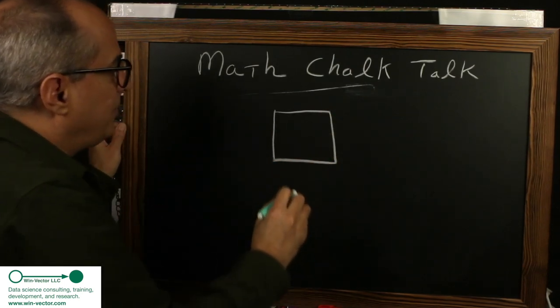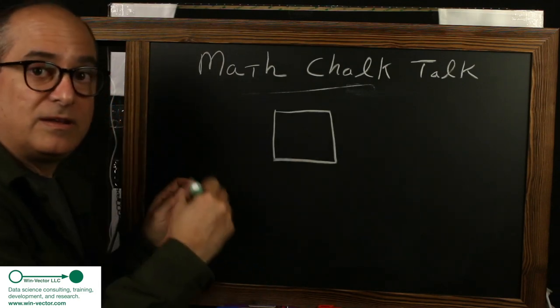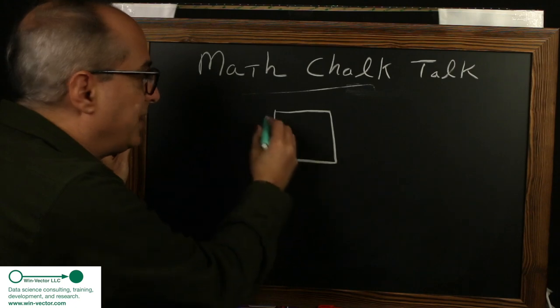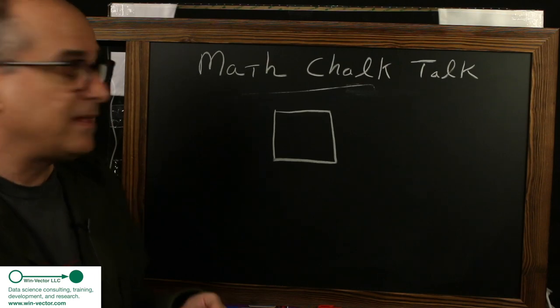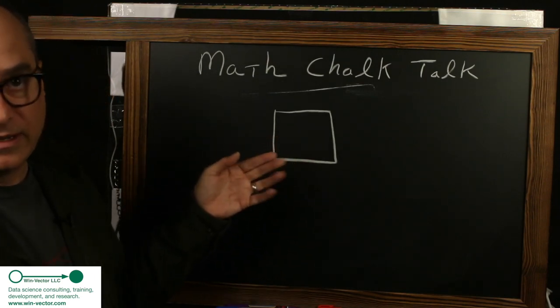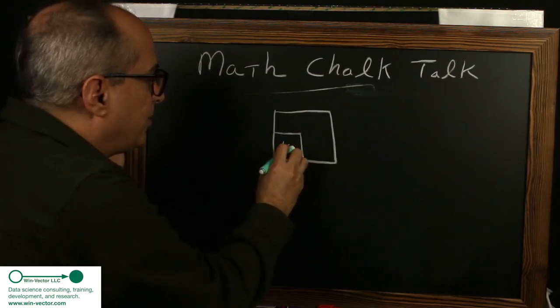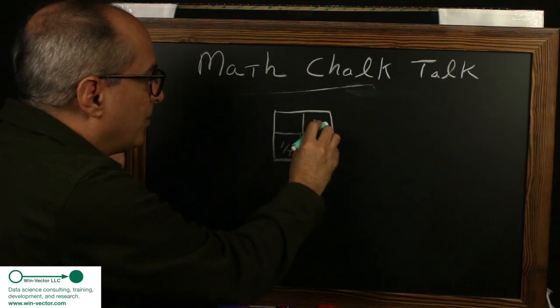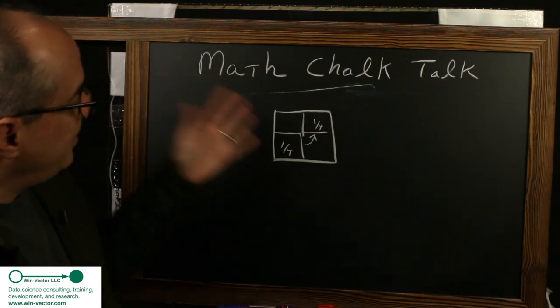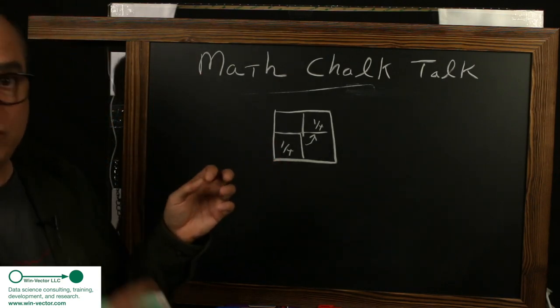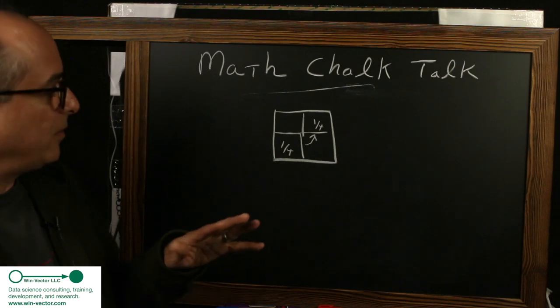Measure theoretic probability assumes we have some universe we're drawing from. In this case, maybe it's the unit square. So this is length one, length one. And we can say we have a probability measure in this case simply defined by a density. And every point here has the same density. And it means that maybe this quadrant has area one fourth. And this quadrant also has area one fourth, because they're just translates of each other over a uniform density.